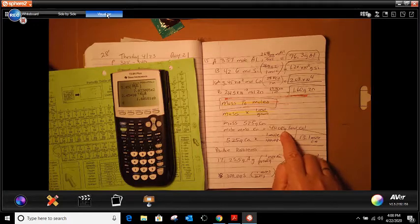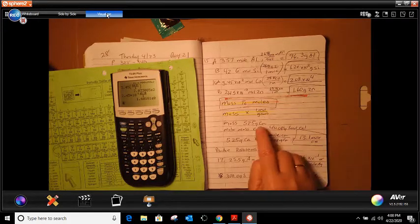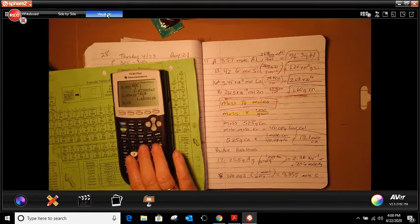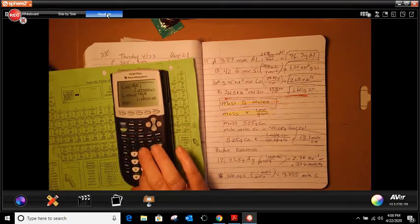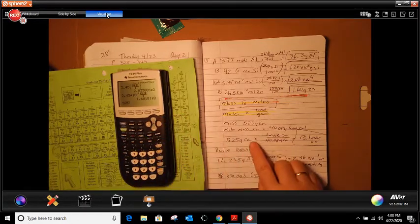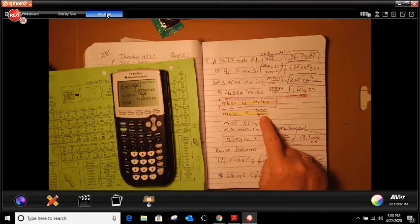So for this one, you're going to take your mass, 525. And then it tells us I'm going to times it by one mole over the grams.